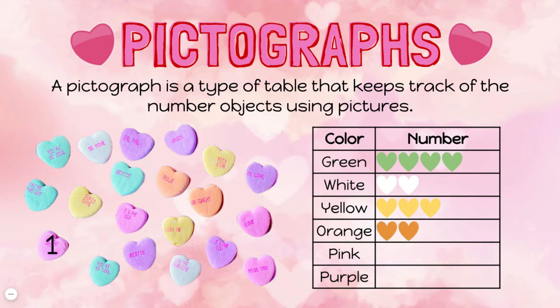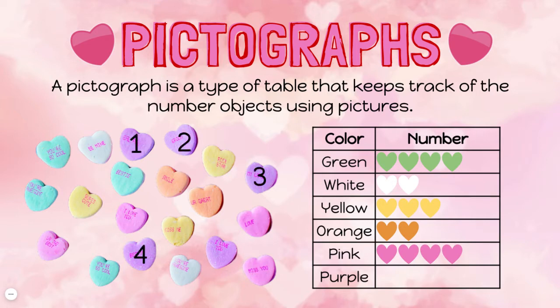One, two, three, four pink candy hearts. And one, two, three, four, five purple candy hearts. Now my pictograph shows exactly how many of each color heart I have.